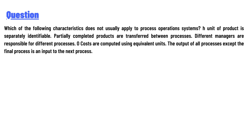The options are: units of product are separately identifiable; partially completed products are transferred between processes; different managers are responsible for different processes; costs are computed using equivalent units; the output of all processes except the final process is an input to the next process.